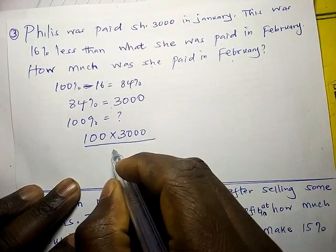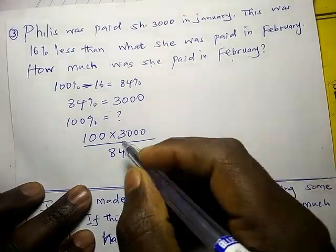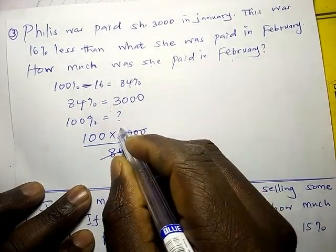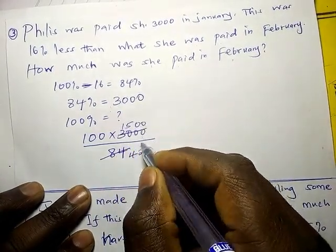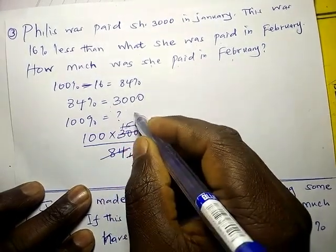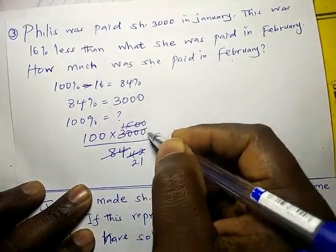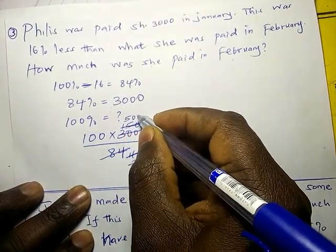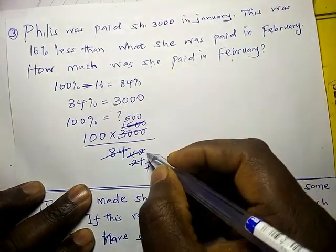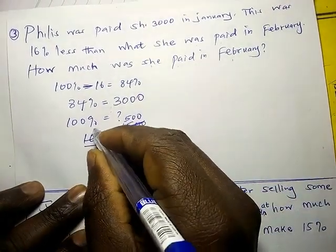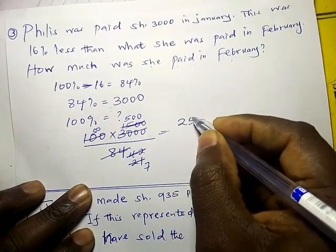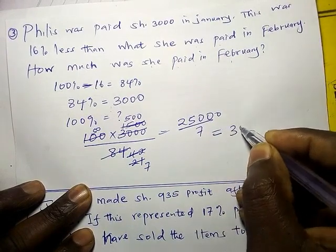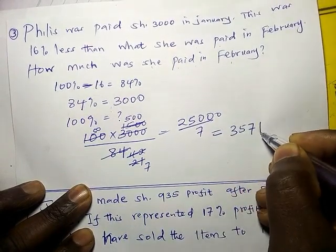So it is 100 times 3000 divided by 84. Simplifying: 100 divided by 84 reduces, giving us 3571.4 shillings. That is the amount that was paid in February.